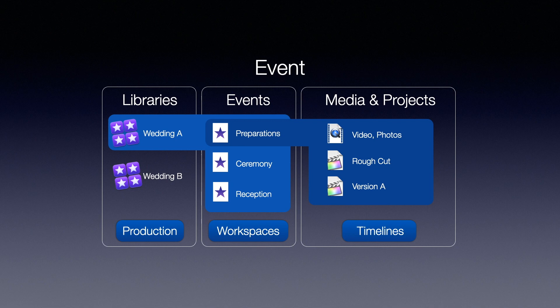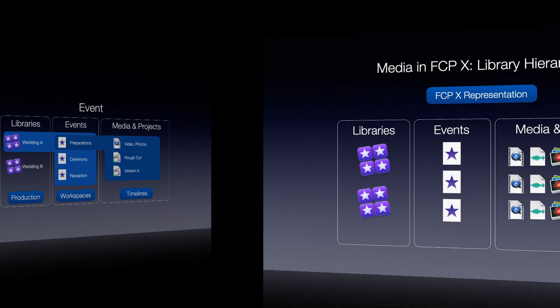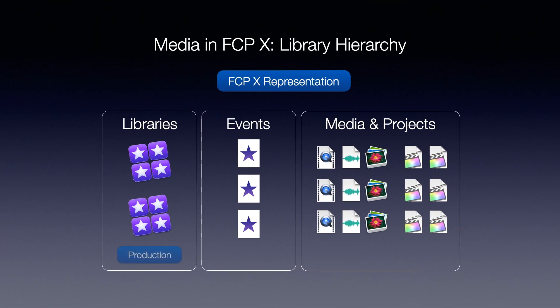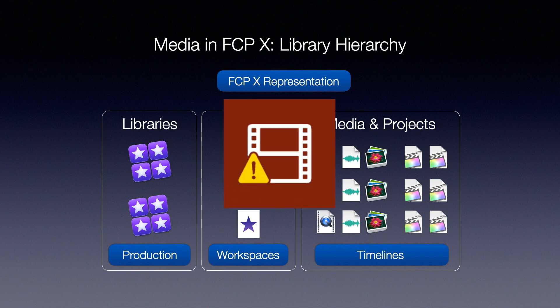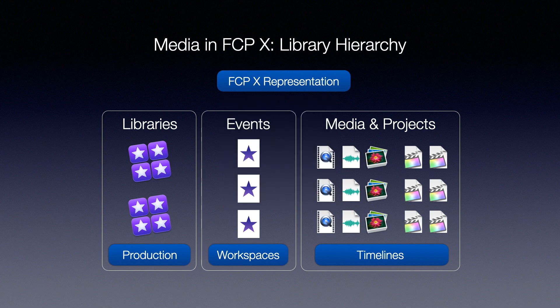Or you could have an event that is dedicated to holding timelines which include media stored in other events. It's very easy to change your mind after you've established how you want to set up your libraries and events and where you want to store your media. However, it is very important — and why should you care? Well, if you haven't thought through where to store your media and you don't know where to find it, you can end up with your media offline. Let's look at a couple of examples of ways that you can organize your media into libraries and events in Final Cut Pro X.